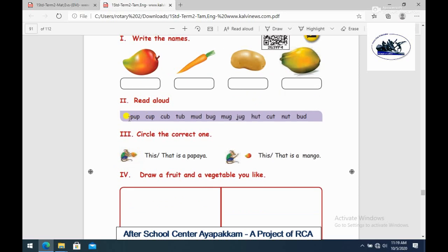Next one is read aloud. So you can learn the words. How do we pronounce the words? Let's see how we pronounce P-U-P Pup, C-U-P Cup, C-U-B Cub, M-U-D Mud. That is the word.